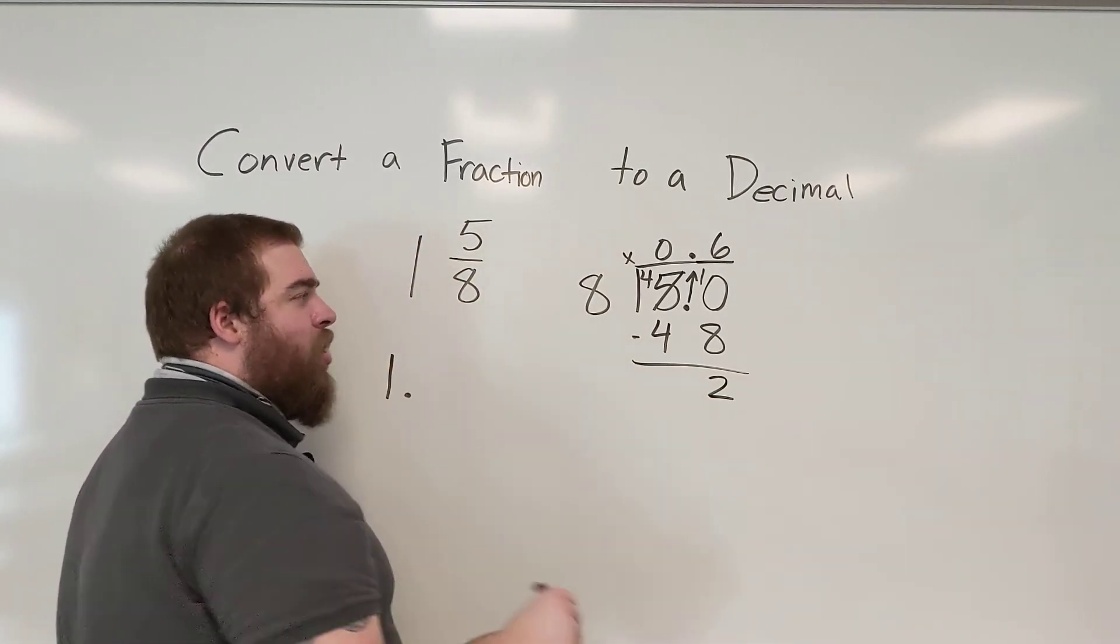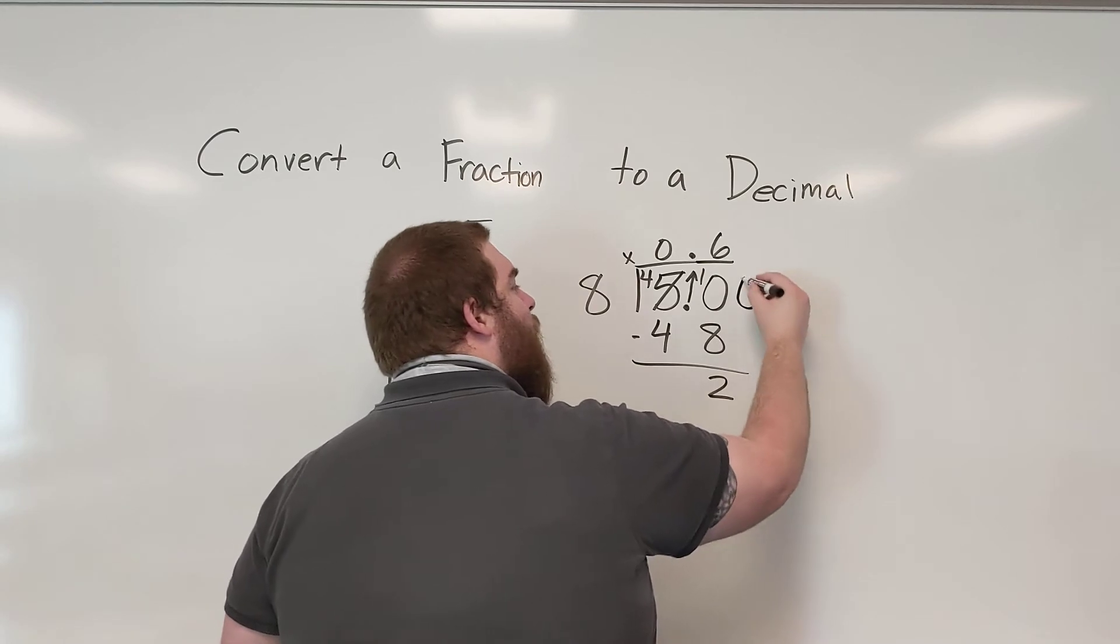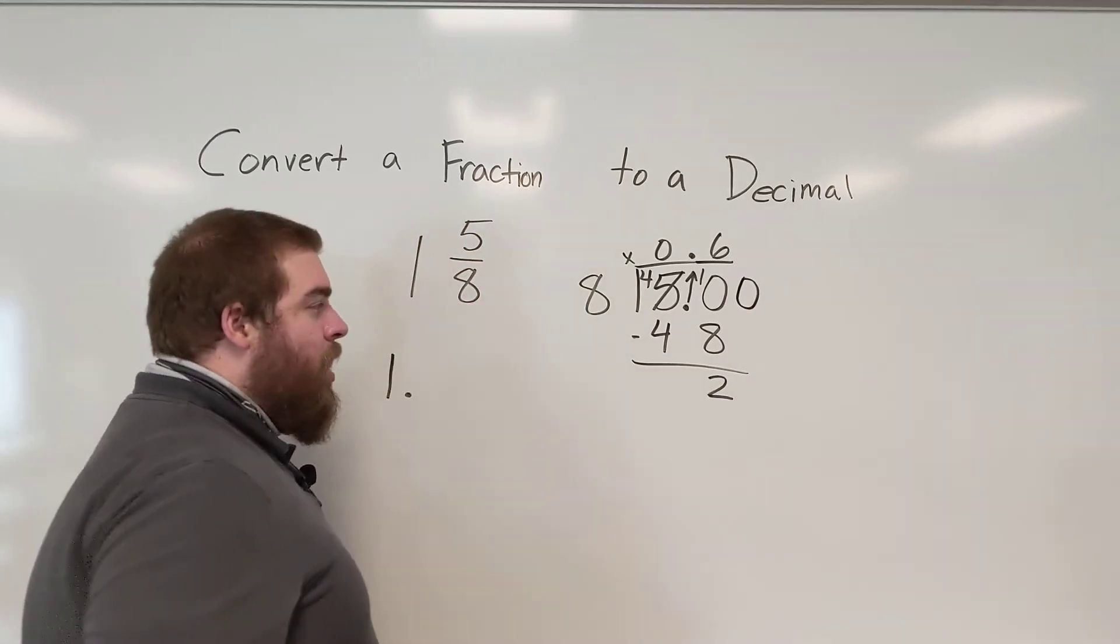And remember we still have a remainder so we need to add on another 0 to the end of our decimal, and bring that down.